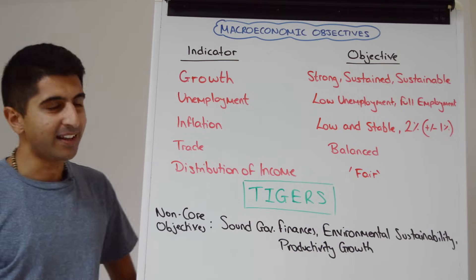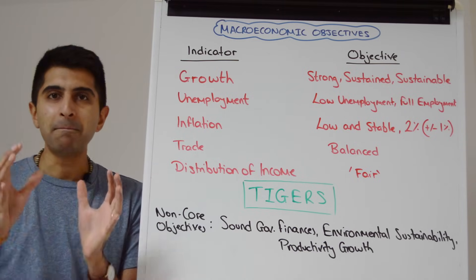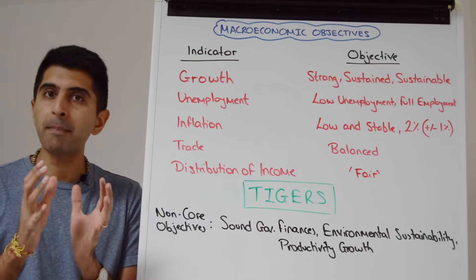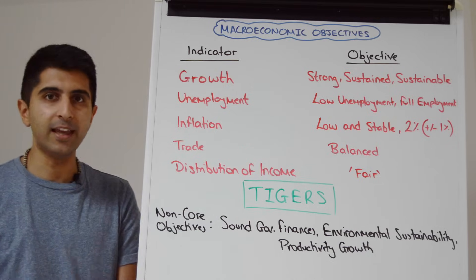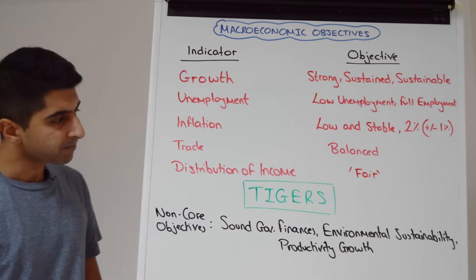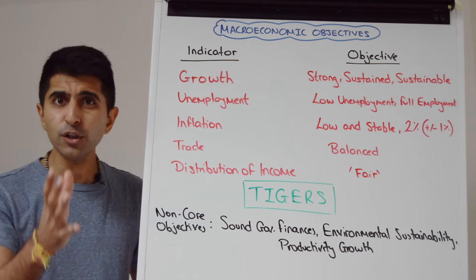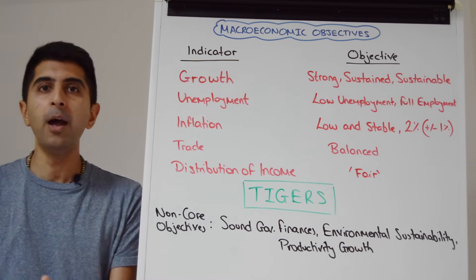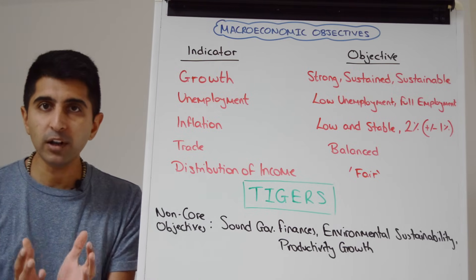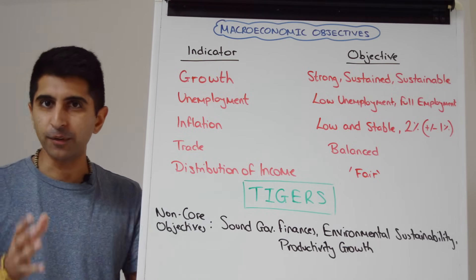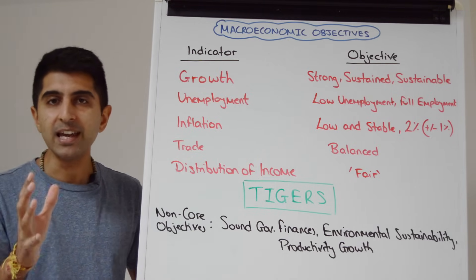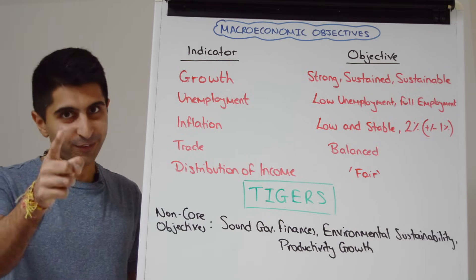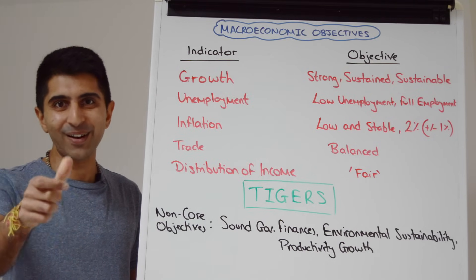So that covers the key macroeconomic objectives — what we study for macro performance in an economy. Stay tuned for the next video where we're going to look at the circular flow of income, a way of modeling the economy, and we'll see some key macro conclusions from that. Thank you so much for watching — I'll see you in that video.